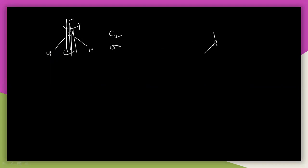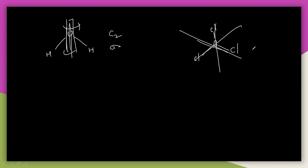You can also take BCl3. In BCl3 we can rotate — we can put a plane like this — it has C3 axis symmetry and three sigma planes. We can also take NH3 (ammonia), which has a C3 rotational axis. Rotating 120 degrees three times gives the exact same structure.